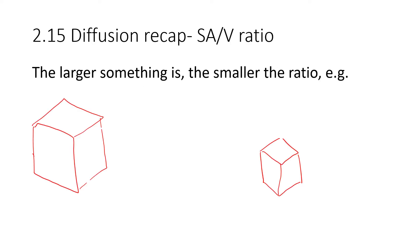The surface area to volume ratio is the important factor here and it's something people really struggle to get their heads around, so I'll try to explain. Imagine we've got two organisms and they're both cubes — a small cube and a larger cube. The larger cube has dimensions 3 cm by 3 cm by 3 cm, and the small cube is 1 cm by 1 cm by 1 cm. We want to figure out the surface area to volume ratio for each and therefore determine which one will carry out faster diffusion.